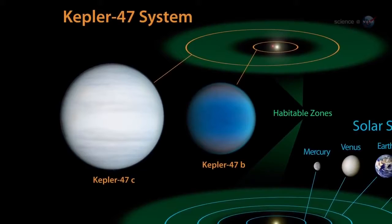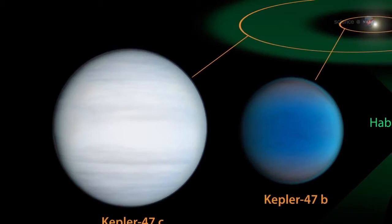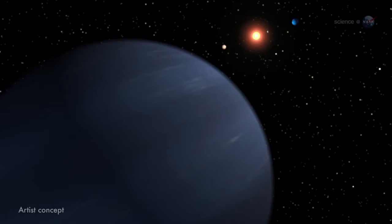The outer planet, Kepler-47c, orbits every 303 days. This puts it in the system's habitable zone, a band of orbits that are just right for liquid water to exist on the surface of a planet. But does this planet even have a surface? Possibly not. The astronomers think it is a gas giant slightly larger than Neptune.